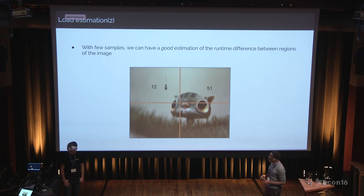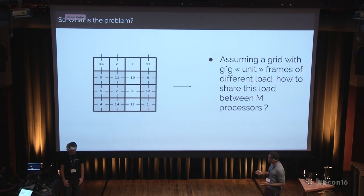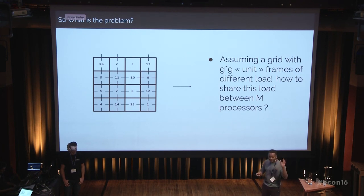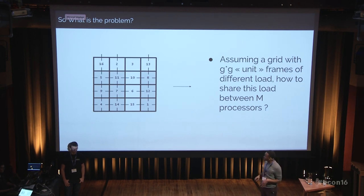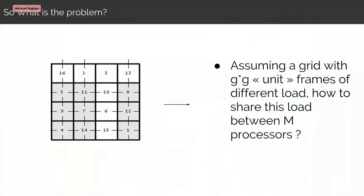This result was important because it allowed us to address the second question. We take the image, make a fine-grain rendering with few samples or a small ratio, and obtain a grid of values corresponding to the expected runtime for each zone. Now we want to create blocks from this fine-grain grid — for instance, if you want to subdivide into two parts, the question is whether to split one way or another. Now we have data that gives us an estimation of the real runtime we could expect for each choice.